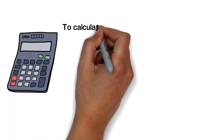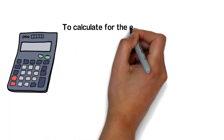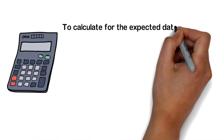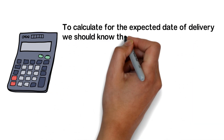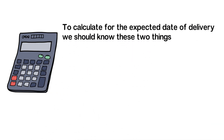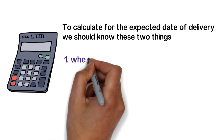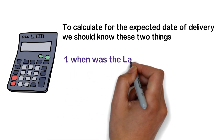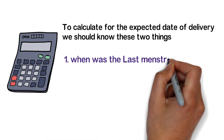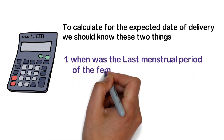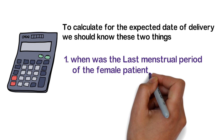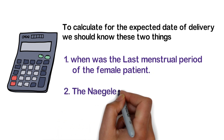To calculate for the expected date of delivery, we should know two things: first, when was the last menstrual period of the female patient, and second, the Naegele's rule.